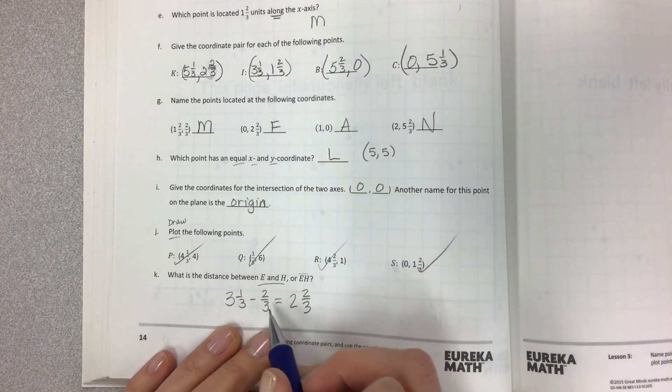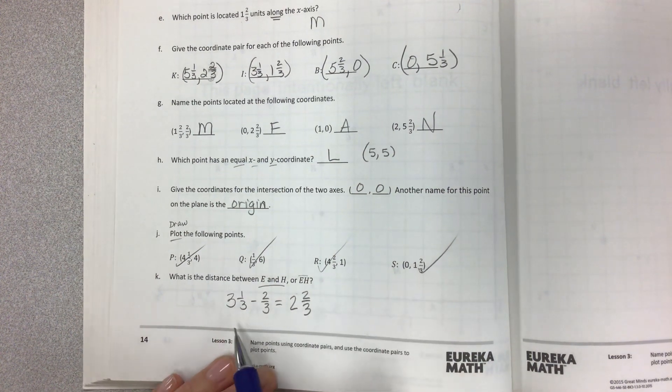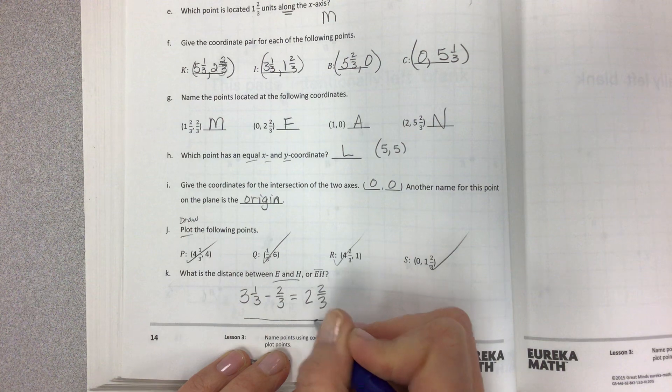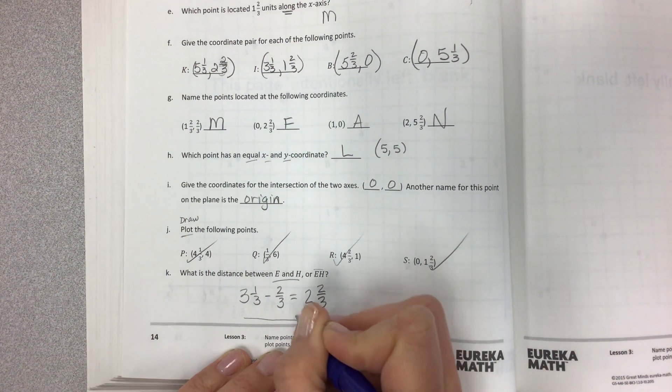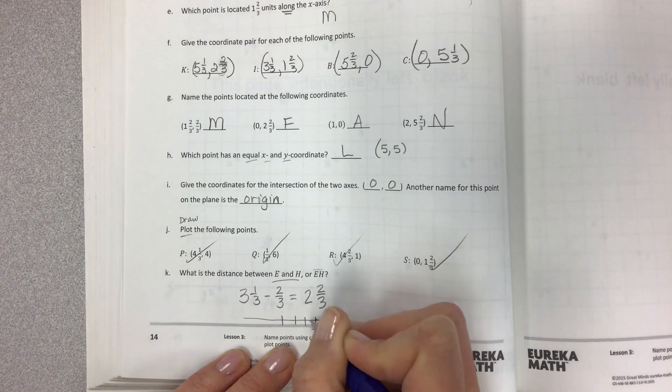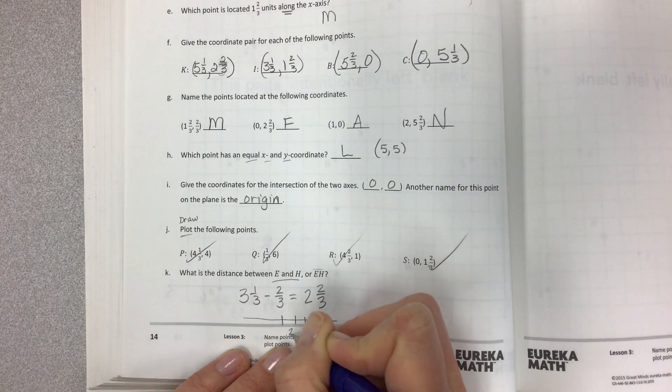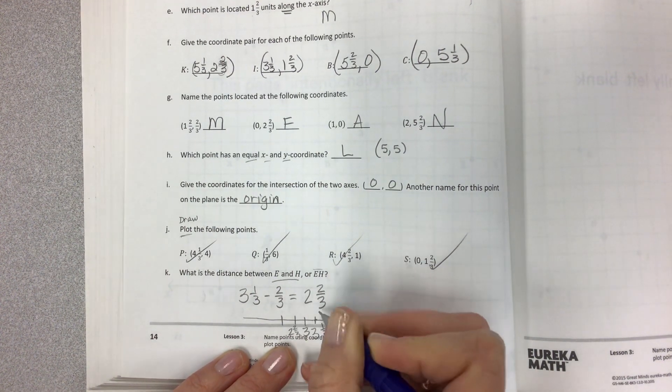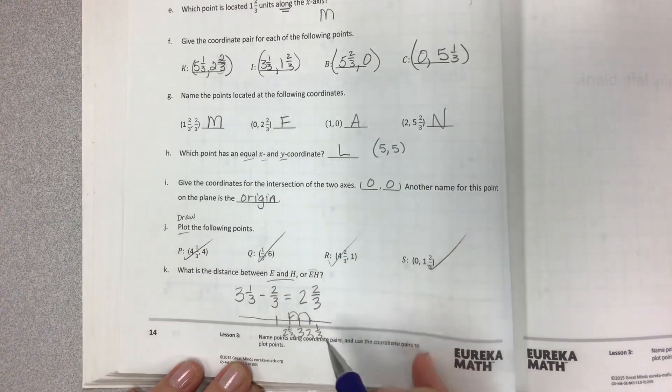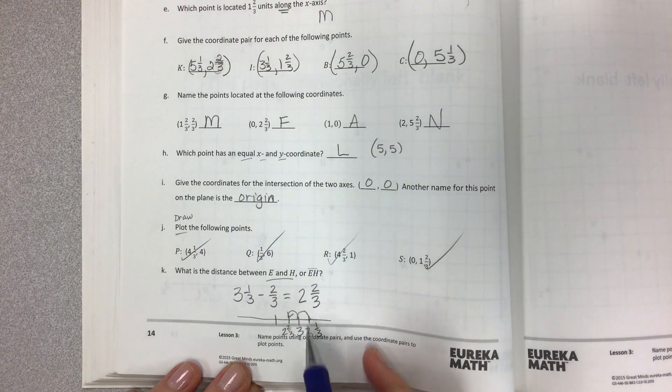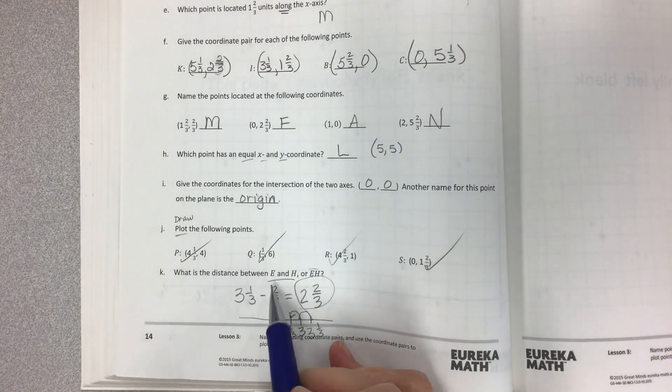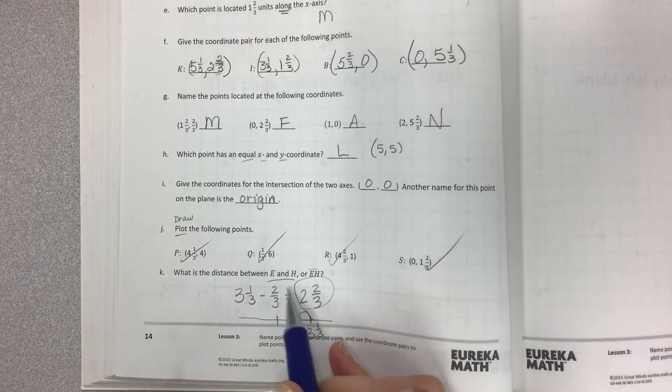So you can do it by just thinking about a number line. And if you start, or you can make little tick marks to help you. If you start at three and one third, and then this would be three, and then this would be two and two thirds. So we're taking away two thirds by going one, two. So you can just make a tool or you can do it in your head. But two and two thirds would be the distance between E and H.